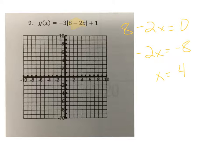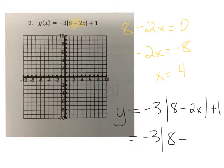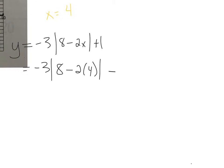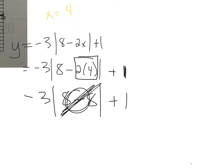The y value is found by plugging in the x value. So y is negative 3 times the absolute value of 8 minus 2x plus 1. Let's see what happens when we plug in a 4. So negative 2 times 4 is negative 8. So this becomes a 0 here. Negative 3 times the absolute value of 0 is also 0, which means we have a y value of positive 1.